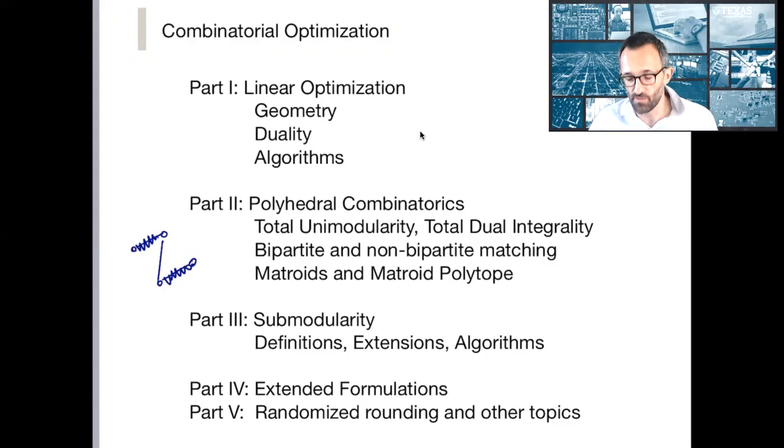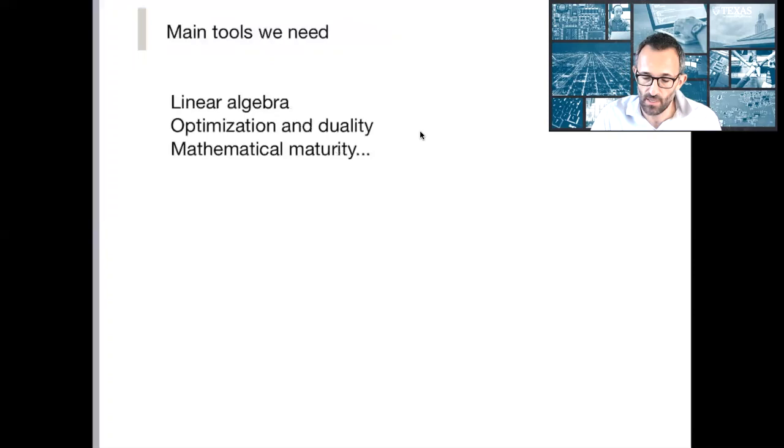Parts one, two, and three will likely take the bulk of this class, and then for part four and part five, extended formulations and randomized rounding, and you can see the catch-all and other topics. In a way, it depends on where we are, how much time we have left, but I don't want any of you to get nervous that we're going to run out of material. This is a truly inexhaustible topic. So, this is more or less the outline of the topics that we're going to be covering.